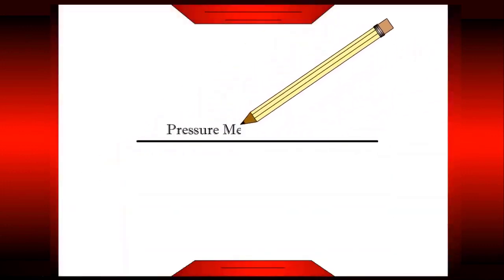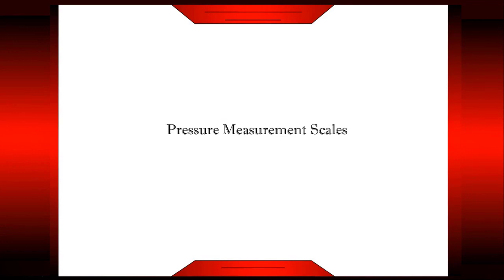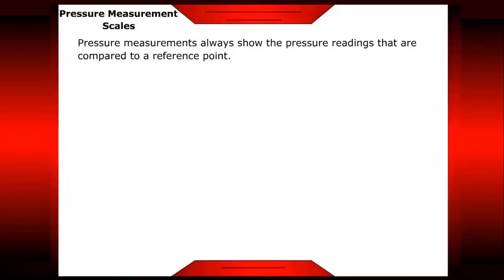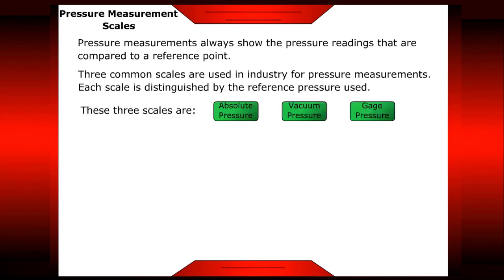Welcome to Pressure Measurement Scales. Pressure measurements always show readings compared to a reference point. Three common scales are used in industry for pressure measurements, each distinguished by the reference pressure used. The three scales are absolute pressure, vacuum pressure, and gauge pressure. Let's take a closer look.